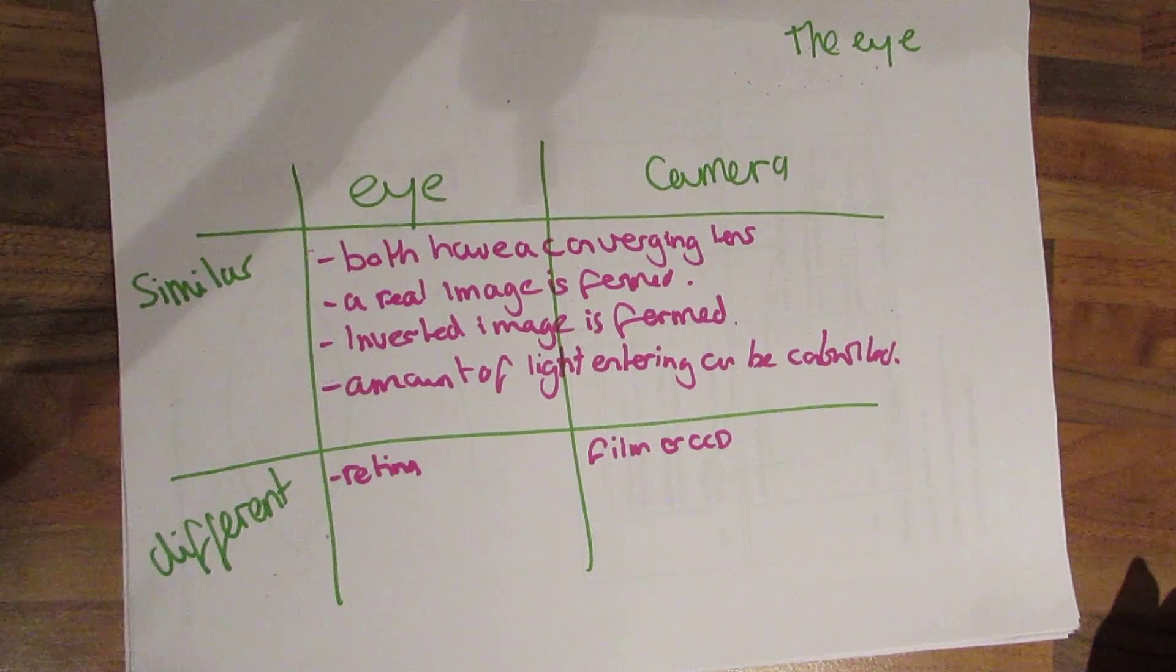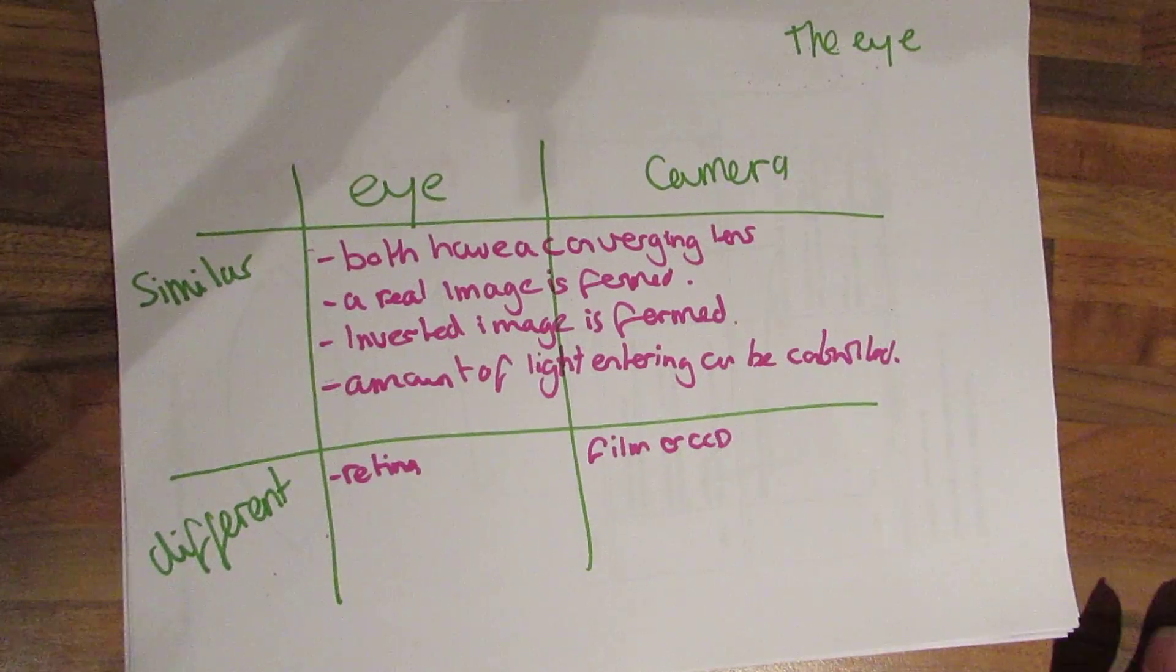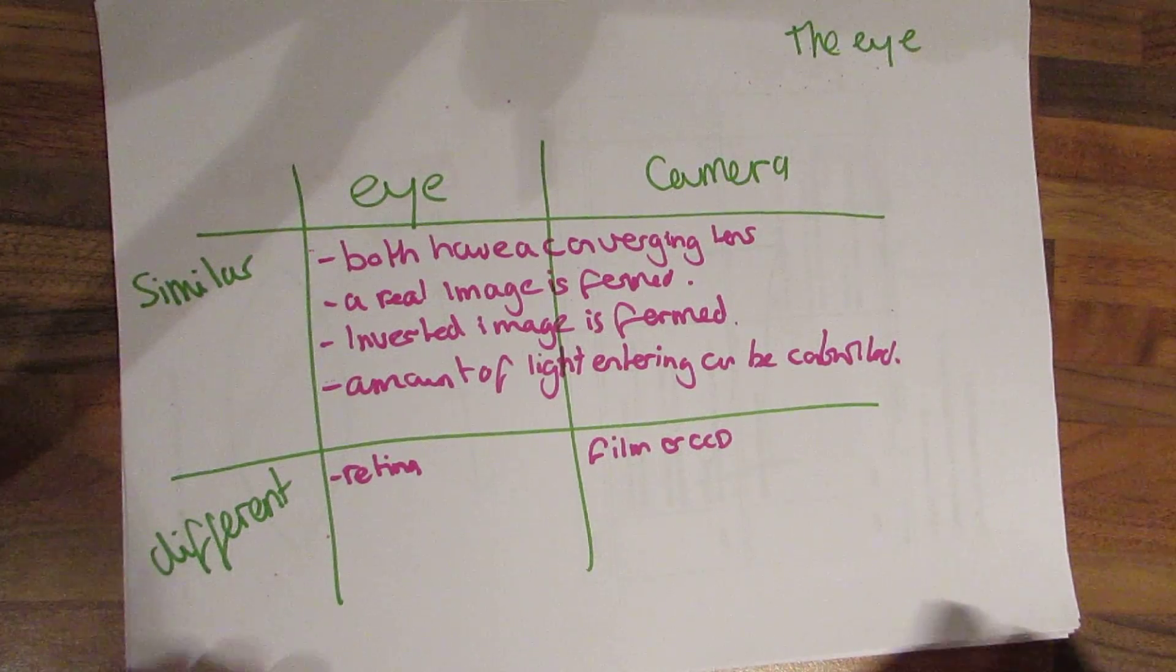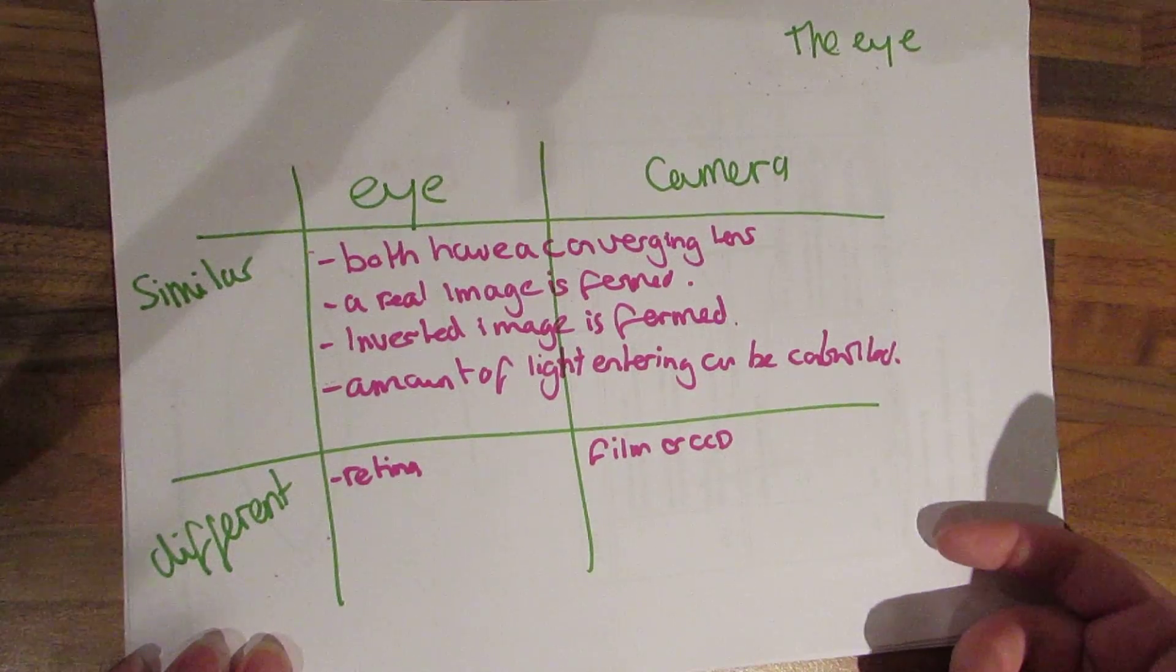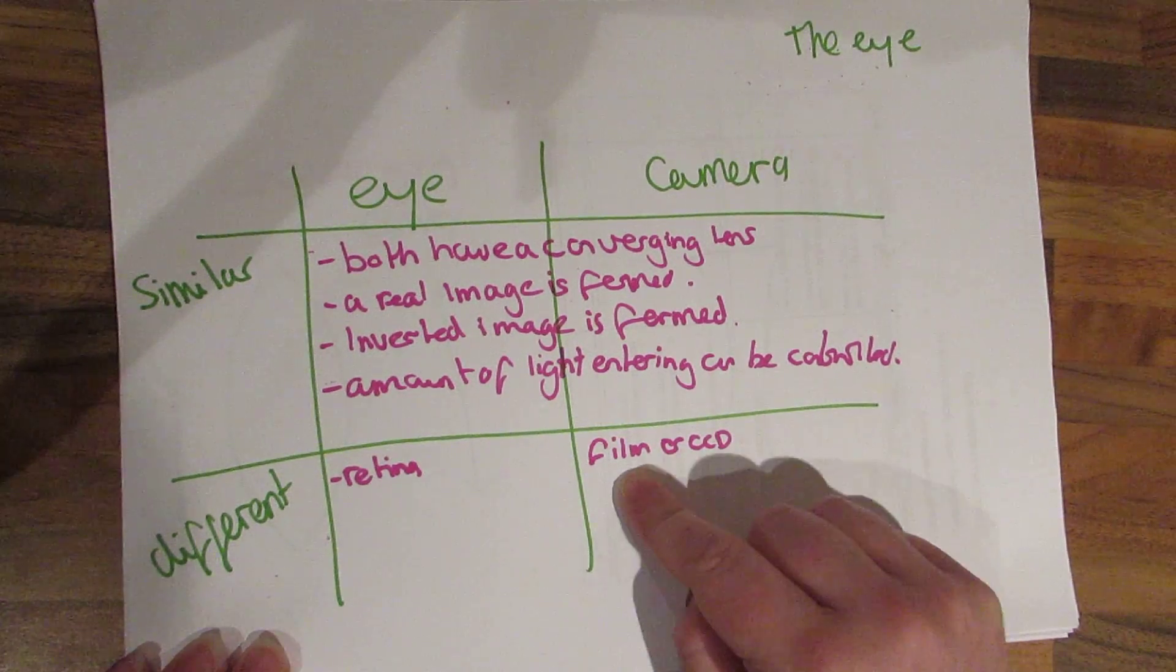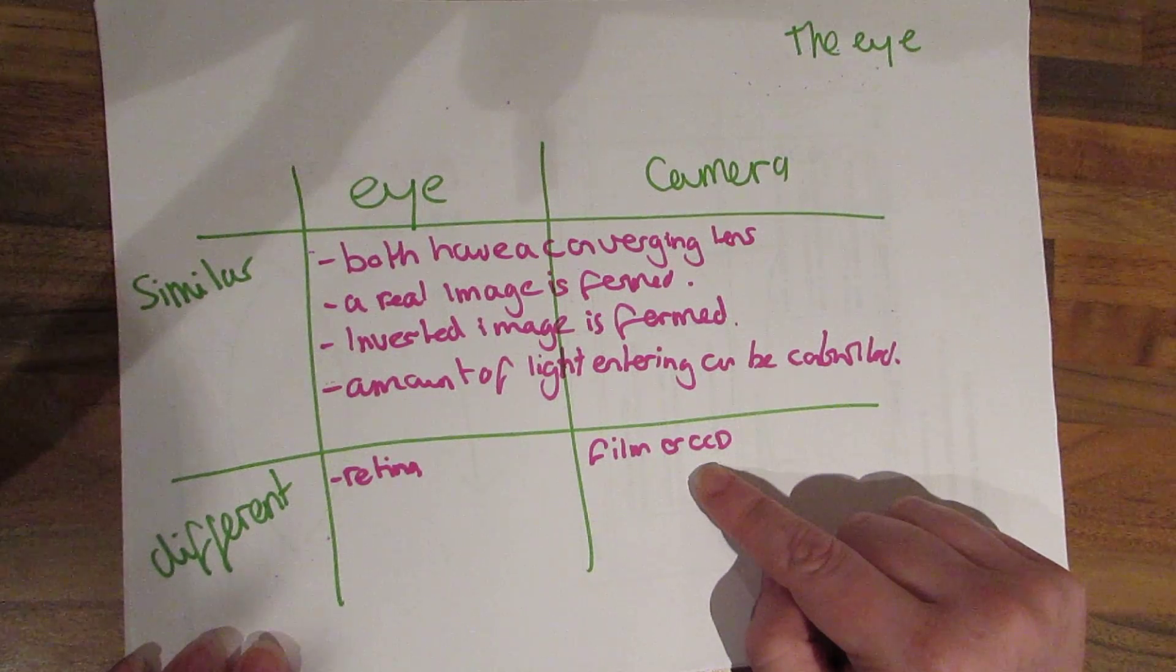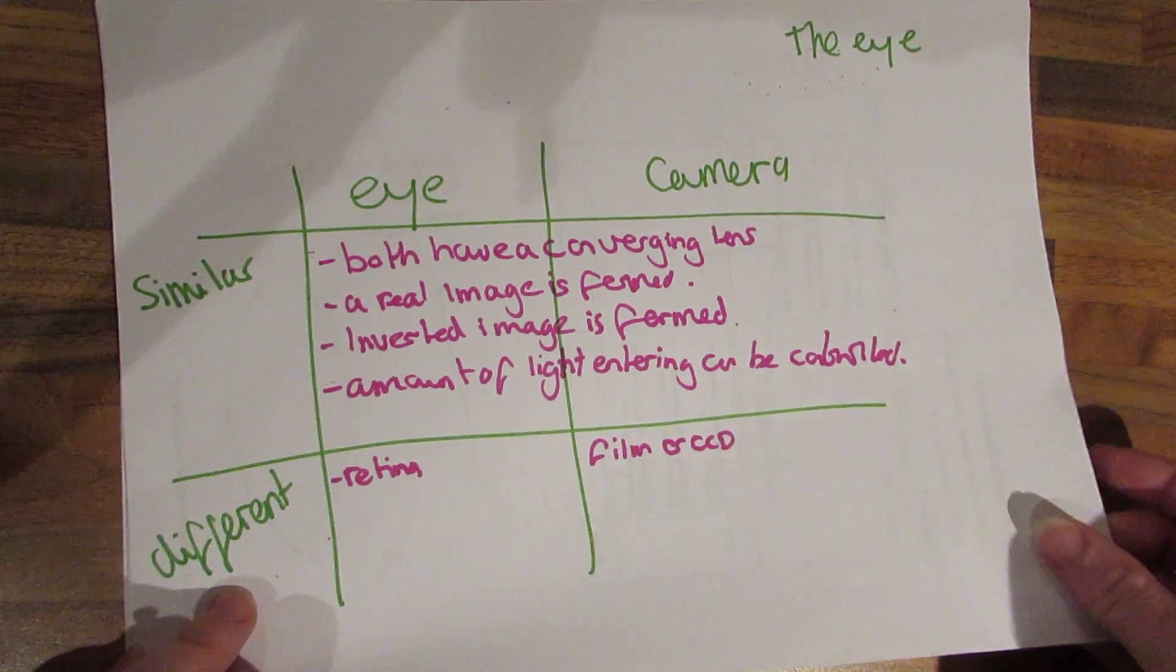So they both have converging lenses. A real image is formed in both situations. Both form an inverted image and the amount of light entering can be controlled. On the eye the image is formed in the retina and in the camera the image is formed on a film or a CCD. A CCD is a charge coupled device. This is what you get in digital cameras these days.